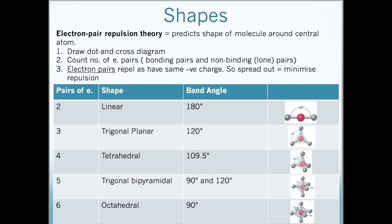The electron pair repulsion theory is a model that predicts the shape of a molecule around the central atom. First we draw a dot and cross diagram like we just did. We then count up the number of electron pairs which includes bonding pairs of shared electrons and non-bonding pairs of electrons. These pairs of electrons repel each other because they have the same negative charge, so they will try to get as far apart as possible to minimize those repulsions.